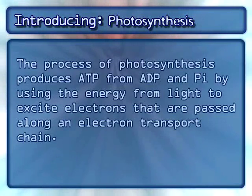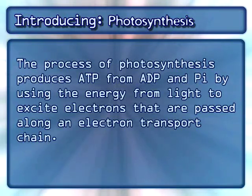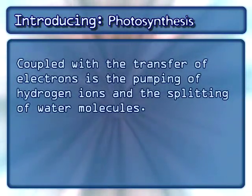The process of photosynthesis produces ATP from ADP and Pi by using the energy from light to excite electrons that are passed along an electron transport chain. Coupled with the transfer of electrons is the pumping of hydrogen ions and the splitting of water molecules.